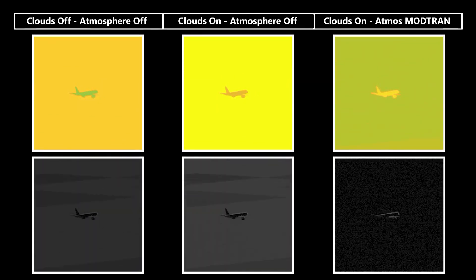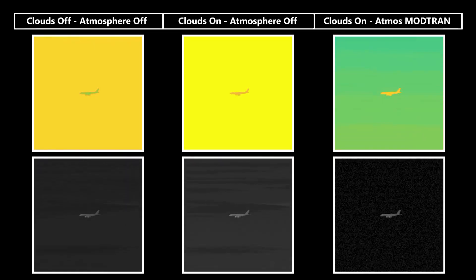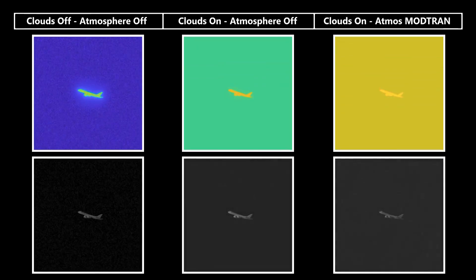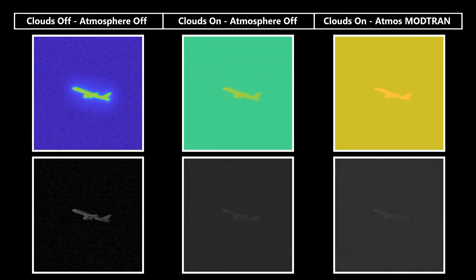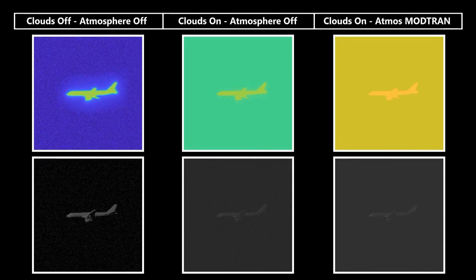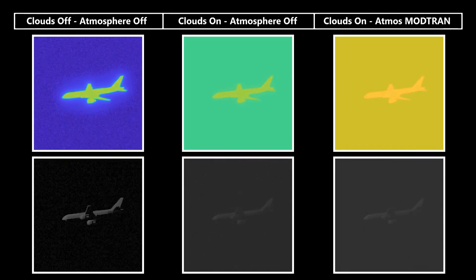Determining when a system can detect, track, identify, and characterize targets of interest under operational conditions is critical to the success of a mission. Modeling clouds and atmosphere and understanding their effects is therefore imperative.